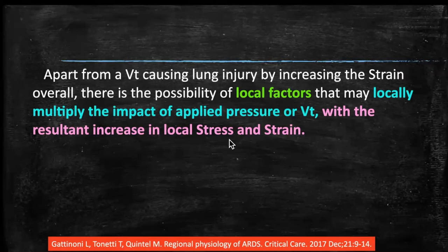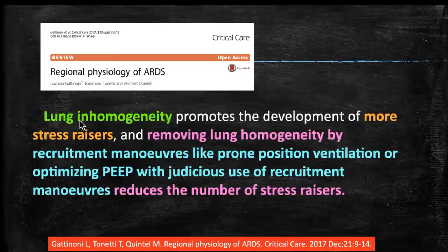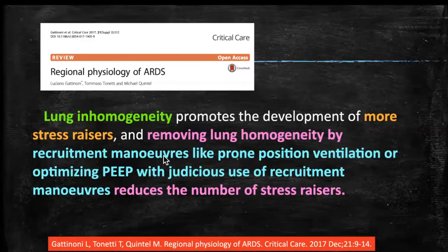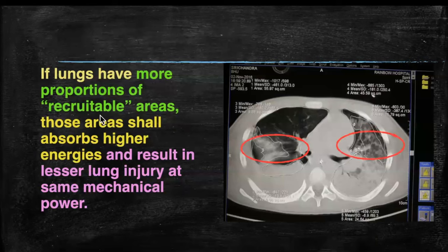Apart from tidal volume causing lung injury by increasing strain, there is also the possibility of local factors within the lungs that locally multiply the impact of applied pressure or tidal volume, resulting in increased local stress and strain. These are called stress raisers — usually operating at the interface between regions of different elasticity, particularly between normal lung and atelectatic lung. Lung inhomogeneity promotes development of stress raisers.